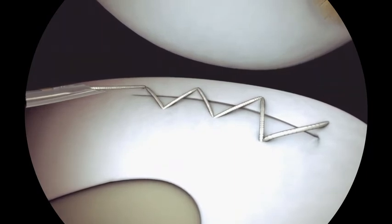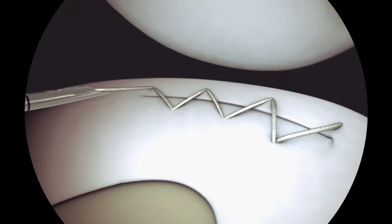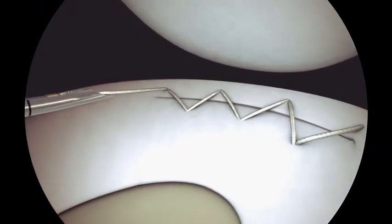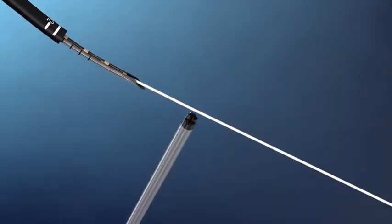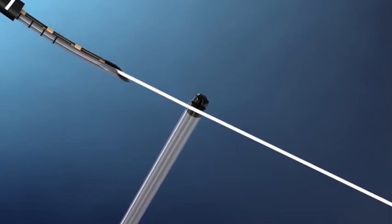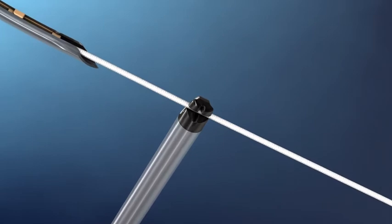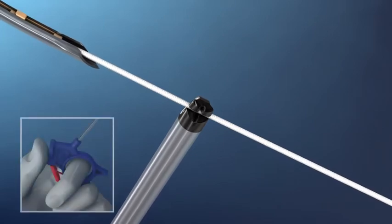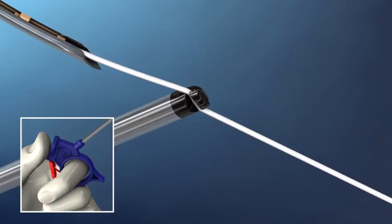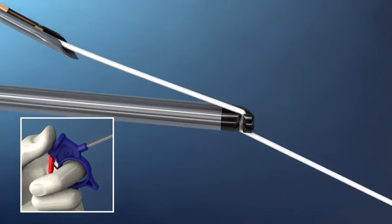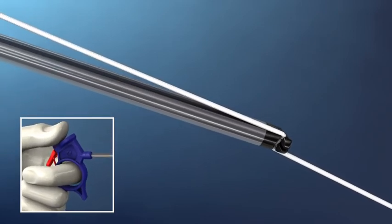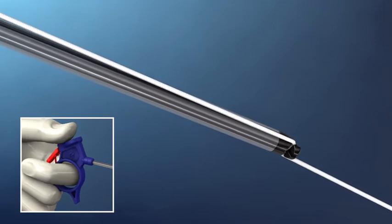After the last stitch, remove the sequent meniscal repair device from the joint. Load the suture cutter onto the suture outside of the joint. Holding the cutter perpendicular and the suture taut, load the suture into the cutter slot. Rotate the cutter shaft to align axially with the suture.